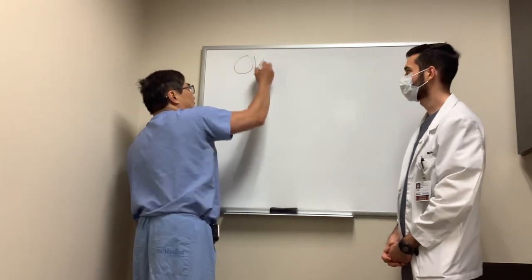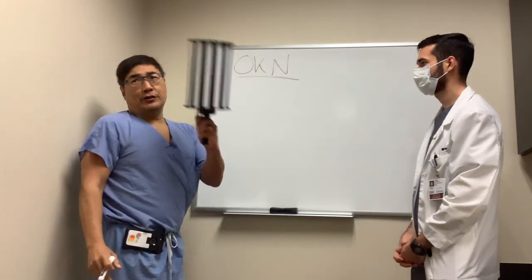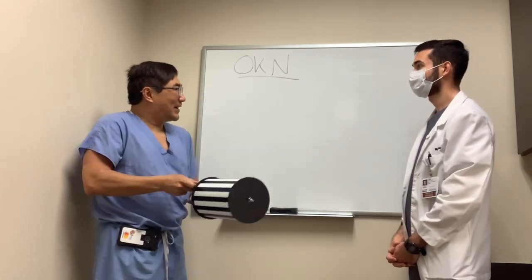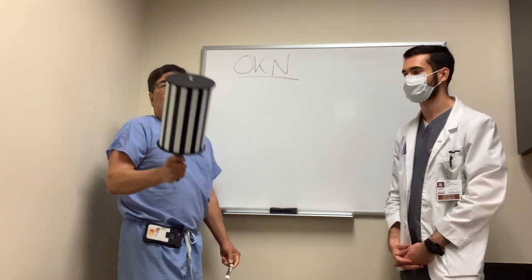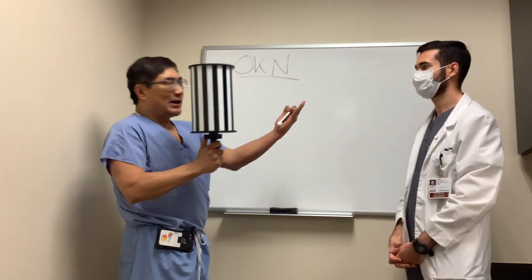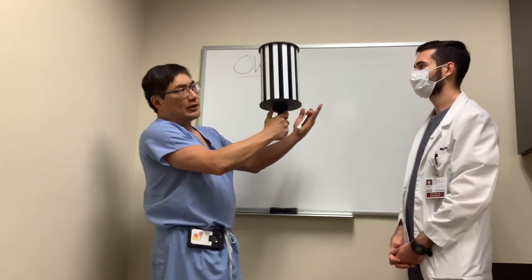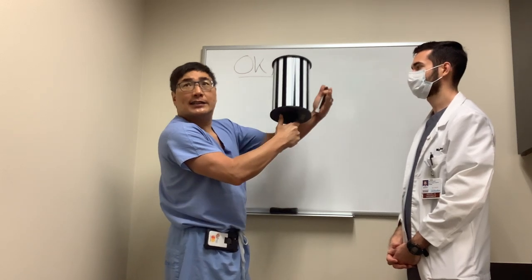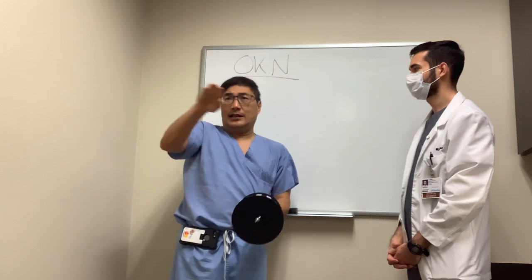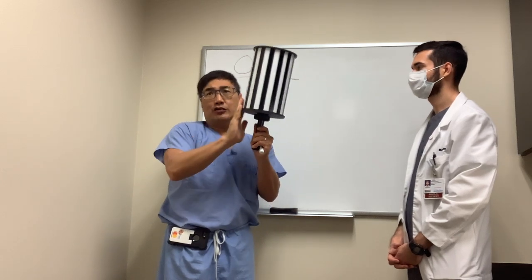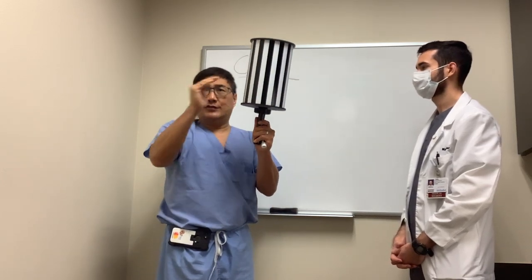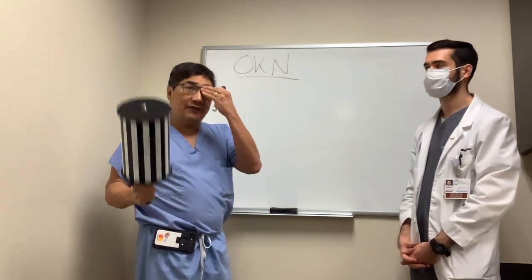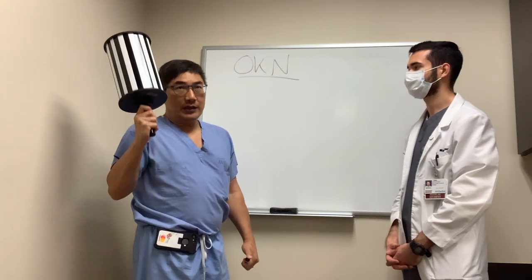Someone wanted to know about this instrument called an optokinetic nystagmus drum, and today I'm joined by Matthew Miller who's going to help us demonstrate. The way to use this drum is: as I rotate it, Matthew's eyes are going to follow the target and then saccade back, generating this pursuit-then-saccade movement as he follows the stripes. It can be used for both afferent checking of vision and efferent checking of eye movement.